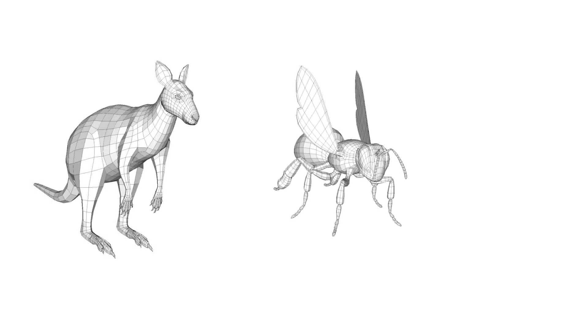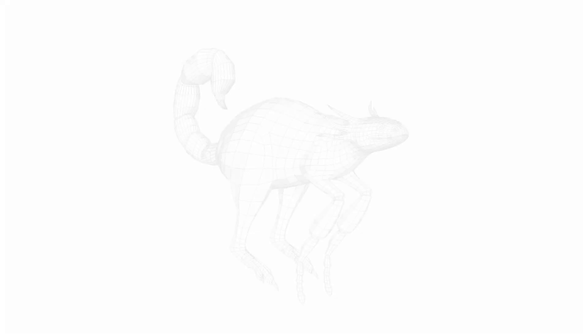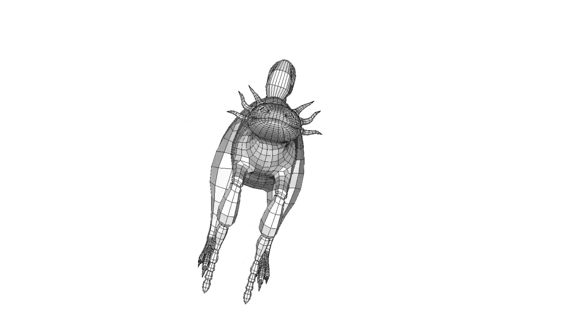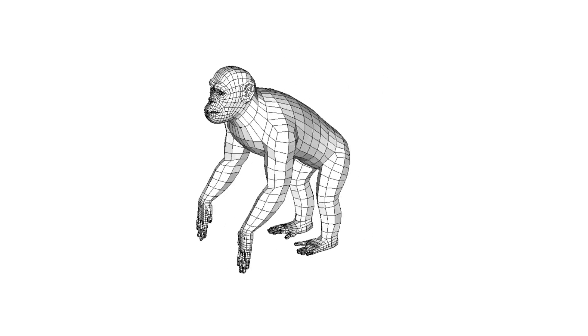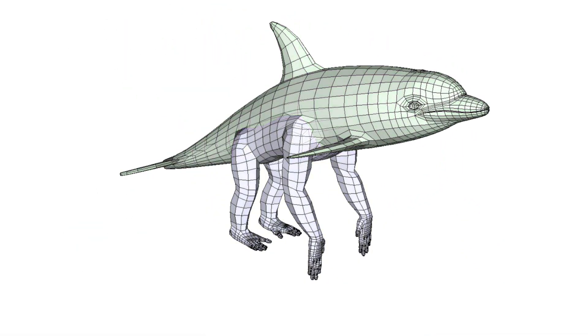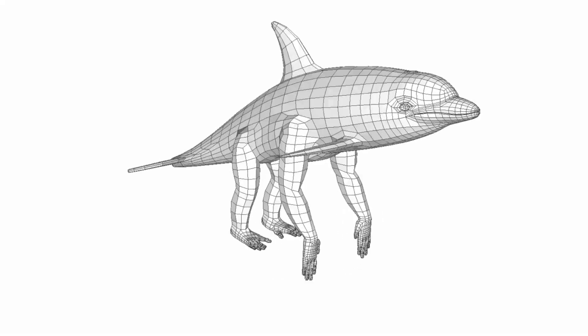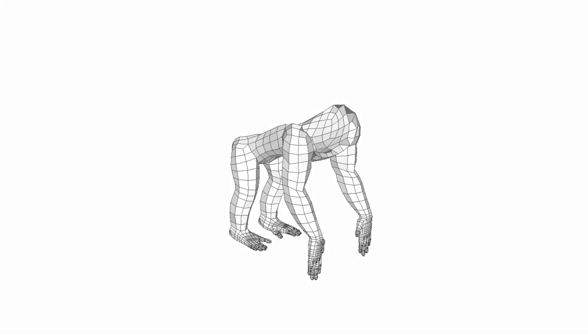We propose QuadMixer, a novel interactive technique to compose QuadMesh components that preserves their original layouts. Given two input quadrilateral meshes, our technique mimics all the conventional Boolean operations that are available for triangle meshes, such as union, difference, and intersection.